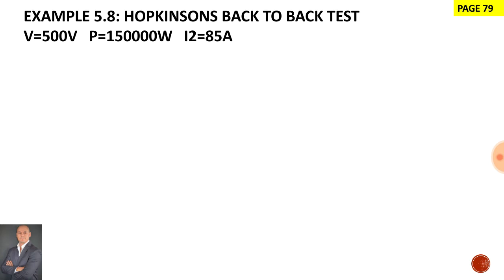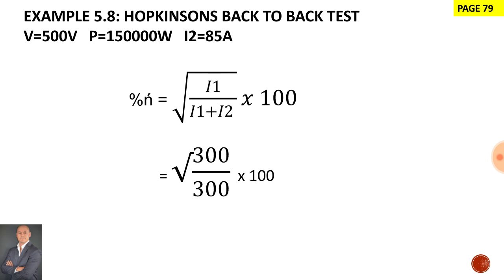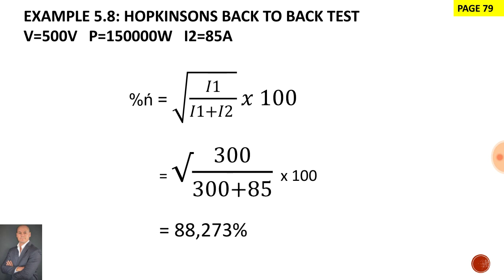To calculate I1, we will say power divided by voltage. The formula available to us in the formula sheet is the square root over the fraction of I1 over I1 plus I2, multiplied by 100, to give us our efficiency. To calculate I1, we will say power over voltage, and that gives us 300 amps. I2 is the current that is taken from the supply, and that gives us an efficiency of 88.273%.